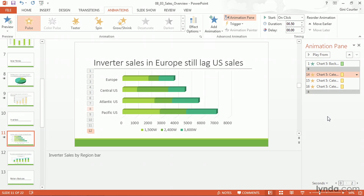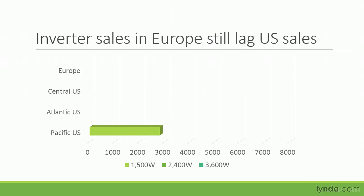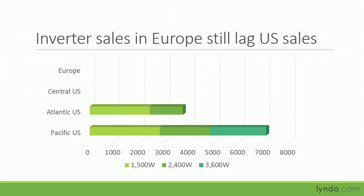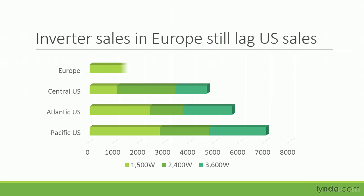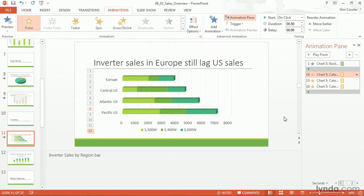Now let's take a look at what this slide looks like. I can preview, but the preview tends to go by pretty quickly — I prefer to hold Shift and hit F5. Here comes my chart. I'm simply pressing Enter or clicking to advance each of the data elements. And then I say inverter sales in Europe are still lagging U.S. sales. There we go — there's my emphasis. That's not bad; it's going to make it easy for people to see.